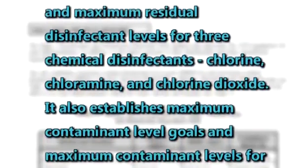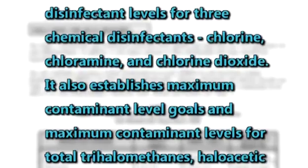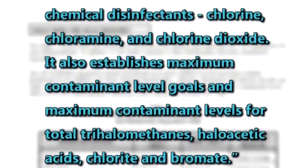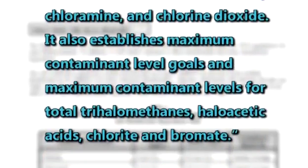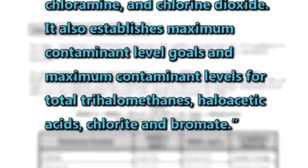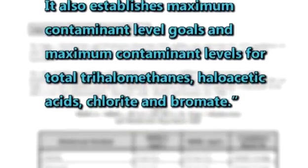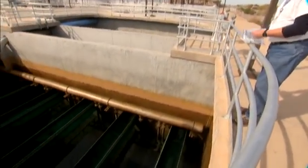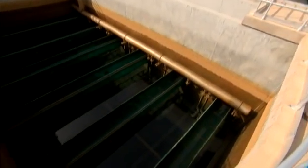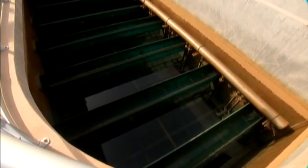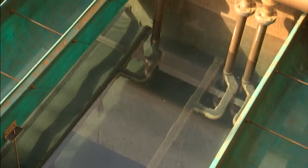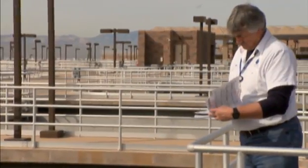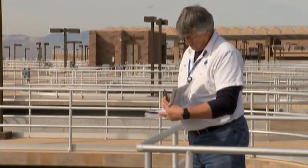The rule also establishes maximum contaminant level goals and maximum contaminant levels for total trihalomethanes, haloacetic acids, chlorite, and bromate. Additionally, the rule sets requirements for utilities under direct influence of surface water that use conventional filtration to remove specified percentages of organic materials, measured as total organic carbon or TOC, from the source water.